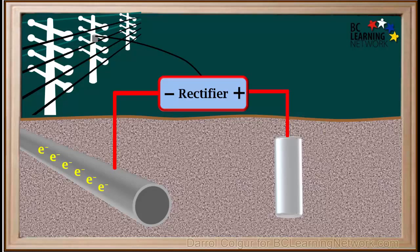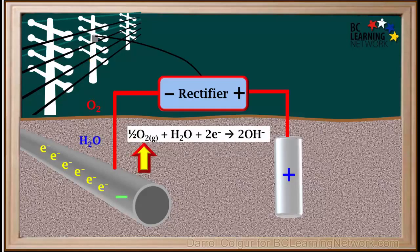Because the anode has lost electrons, it has acquired a positive charge. And because the pipe has gained electrons, it has acquired a negative charge. If oxygen makes its way through the ground, it will combine with water and excess electrons from the pipe to form hydroxide ions. As long as the pipe has extra electrons supplied by the rectifier, iron atoms in the steel pipe will not be oxidized, and in this way the pipe is cathodically protected.